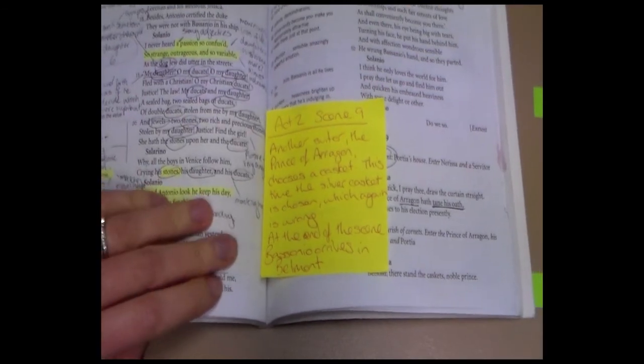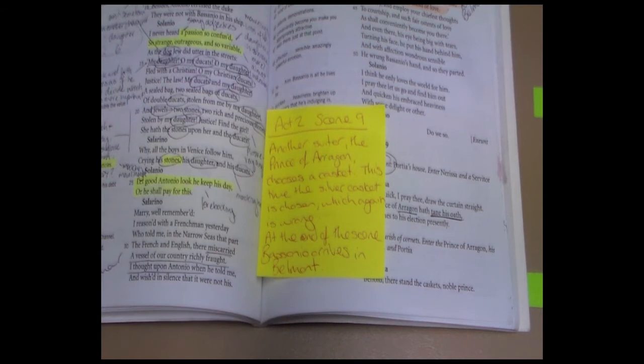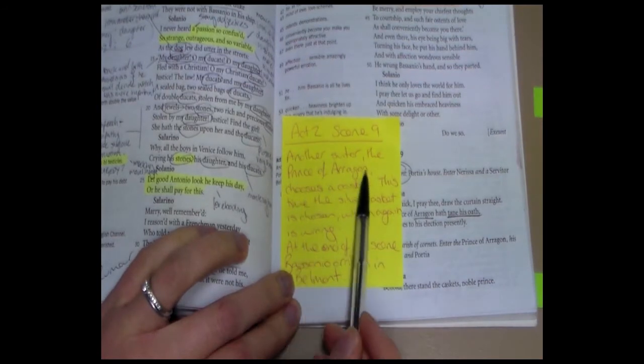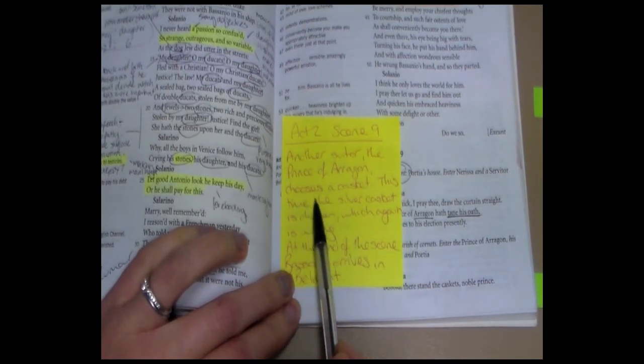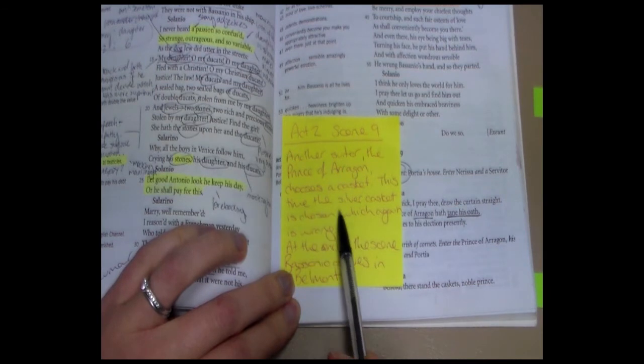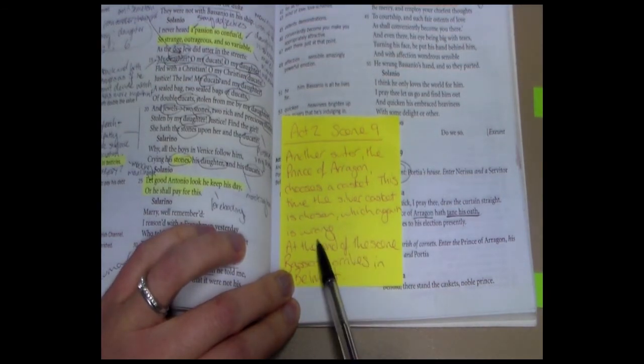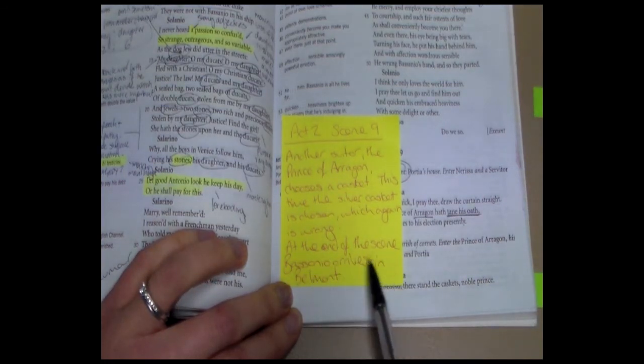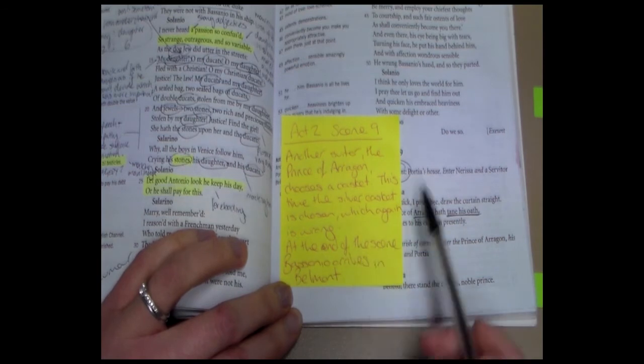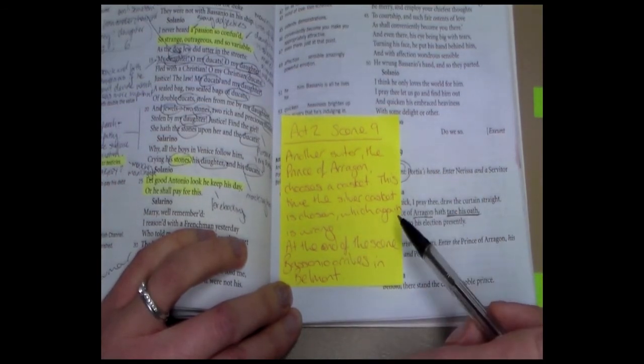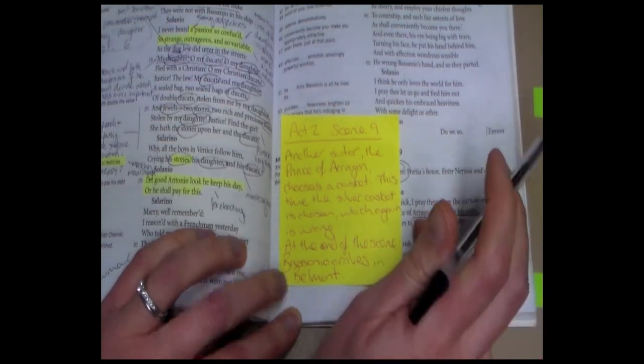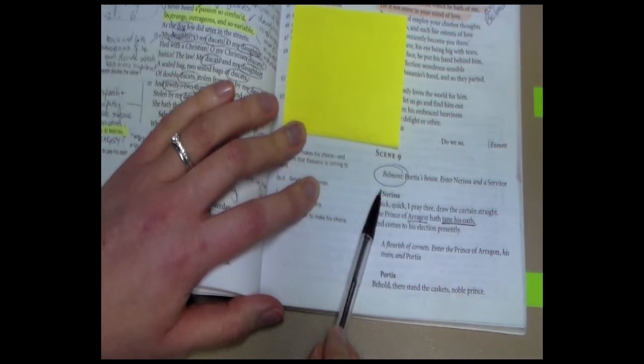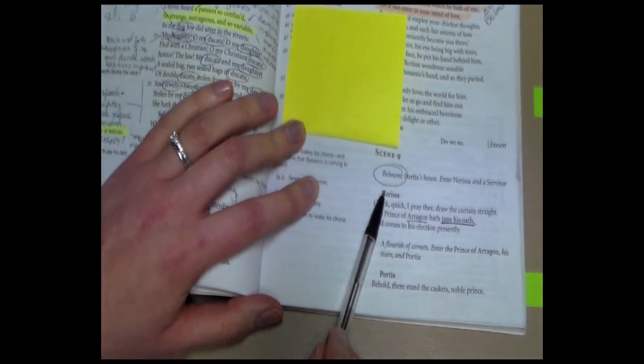This is Act 2, Scene 9, and it is the second of the suitors. So again, on our yellow post-it note, we're writing down the plot, and we've written that there is another suitor, the Prince of Aragon, who chooses a casket. This time, the silver casket is chosen, which again is incorrect, and at the end of this scene, we see the arrival of Bassanio and his messenger in Belmont, and so the audience becomes quite excited, because we know we're about to get to the real choosing of the casket. So once again, we have circled that we're in Belmont. We know that this is the world of fairy tale, fantasy, love.